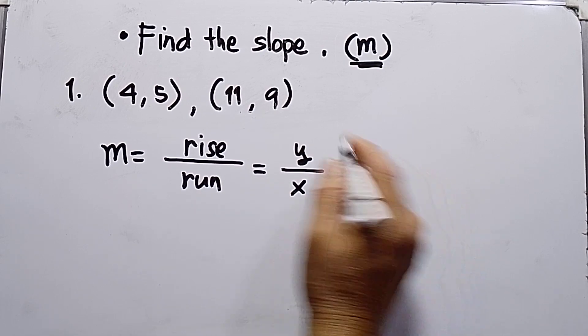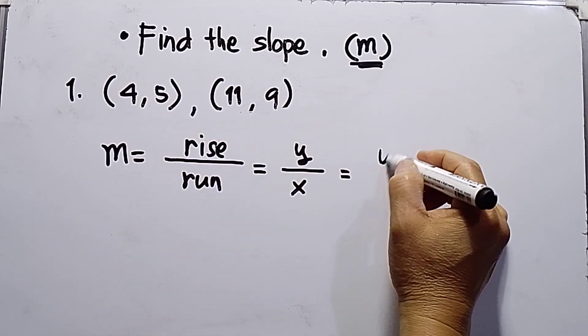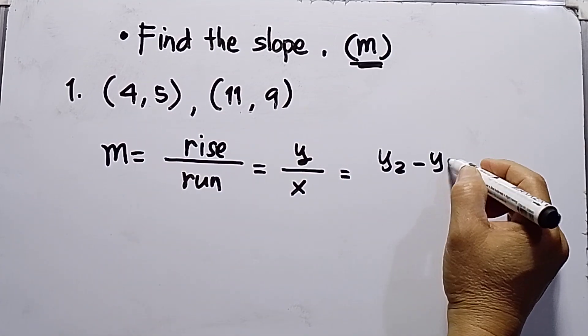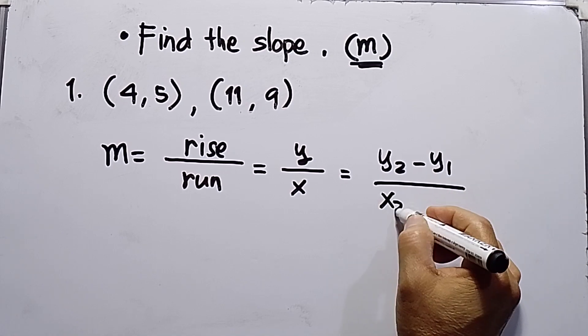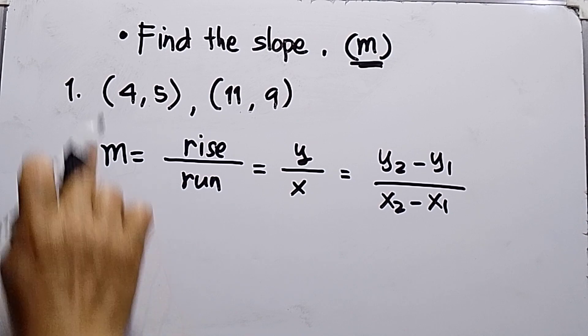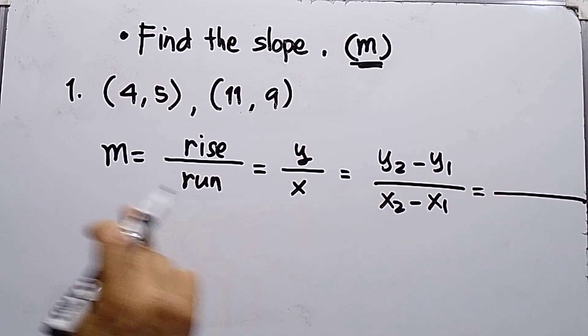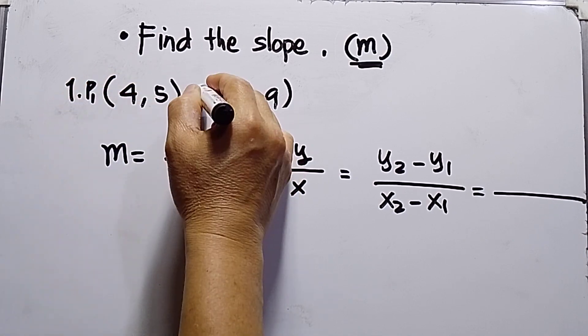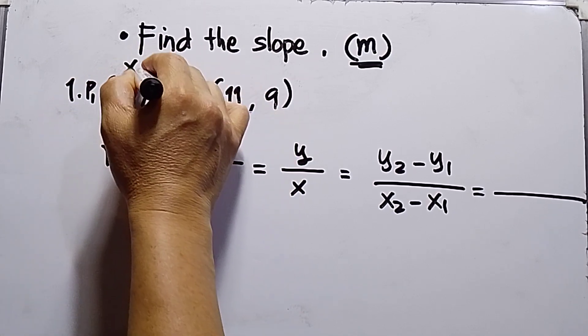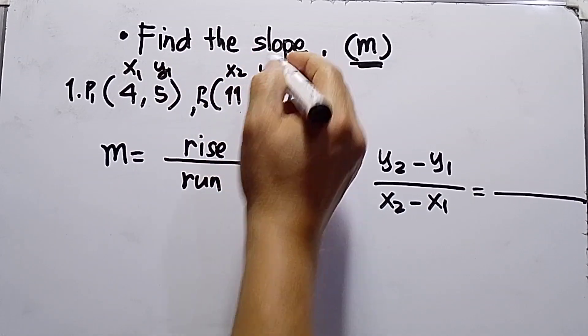But the formula we will use because there are two points is Y2 minus Y1 over X2 minus X1. So we will apply points, point 1 and point 2. So take note, this is point 1 and then this is point 2. Of course, this is X1, this is Y1, this is X2 and then the last is Y2.